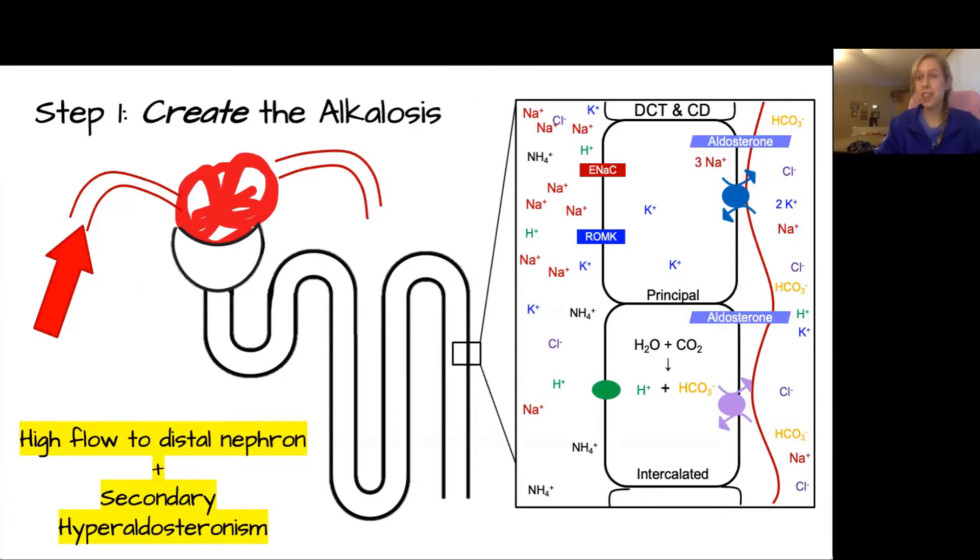Now hopefully this looks familiar. We have a high flow state to the distal nephron in combination of the presence of aldosterone. This means that aldosterone is going to be allowed to accentuate all the activities that we've already learned about. So we're going to have more sodium reabsorption, more potassium excretion, and then importantly, in the intercalated cell, the aldosterone is going to also increase the creation of free hydrogen bicarb for the bicarb to be absorbed into the blood and the hydrogen to be pumped into the lumen to be excreted.